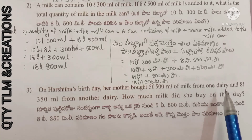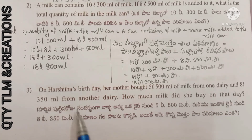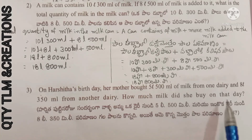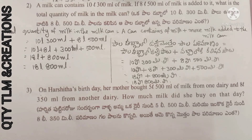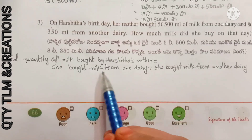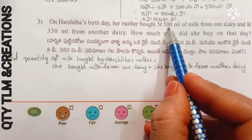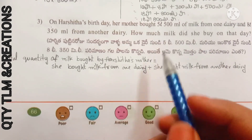Next question: on Harshita's birthday, her mother bought 5 liters 400 milliliters of milk from one dairy and 8 liters 350 milliliters from another dairy. How much milk did she buy on that day? Total quantity of milk bought by Harshita's mother: she bought milk from one dairy equal to 5 liters 400 milliliters.